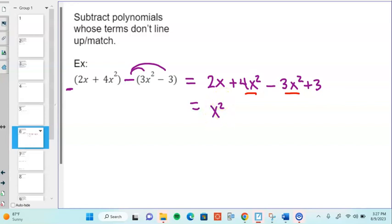Next highest power of x is x to the first. There's only one of those, so nothing to combine with it. So plus 2x. And finally plus 3, don't forget him. And we have x squared plus 2x plus 3 for our final answer. All right.